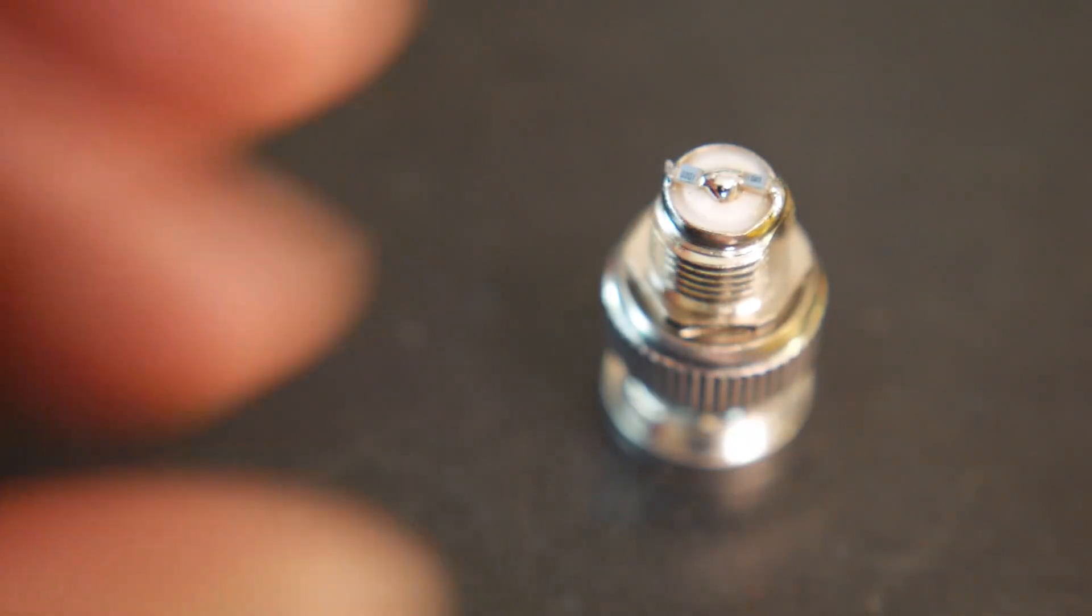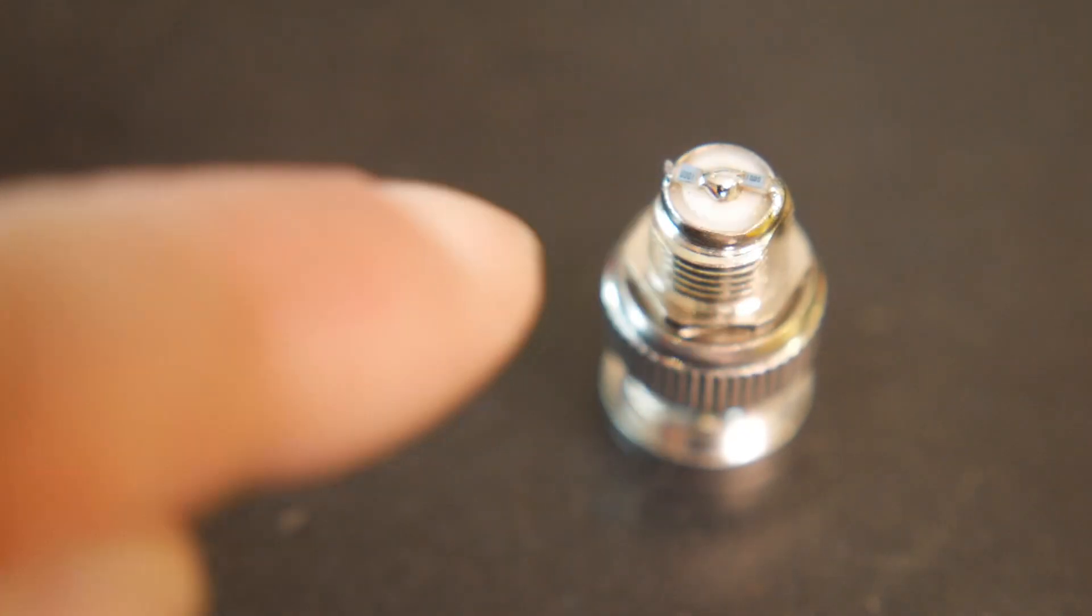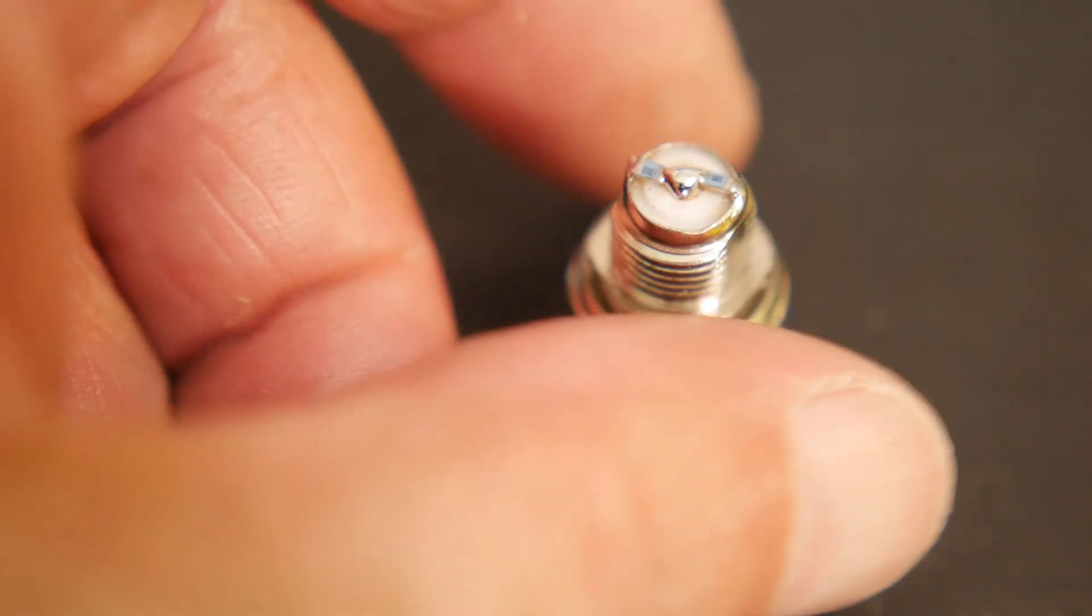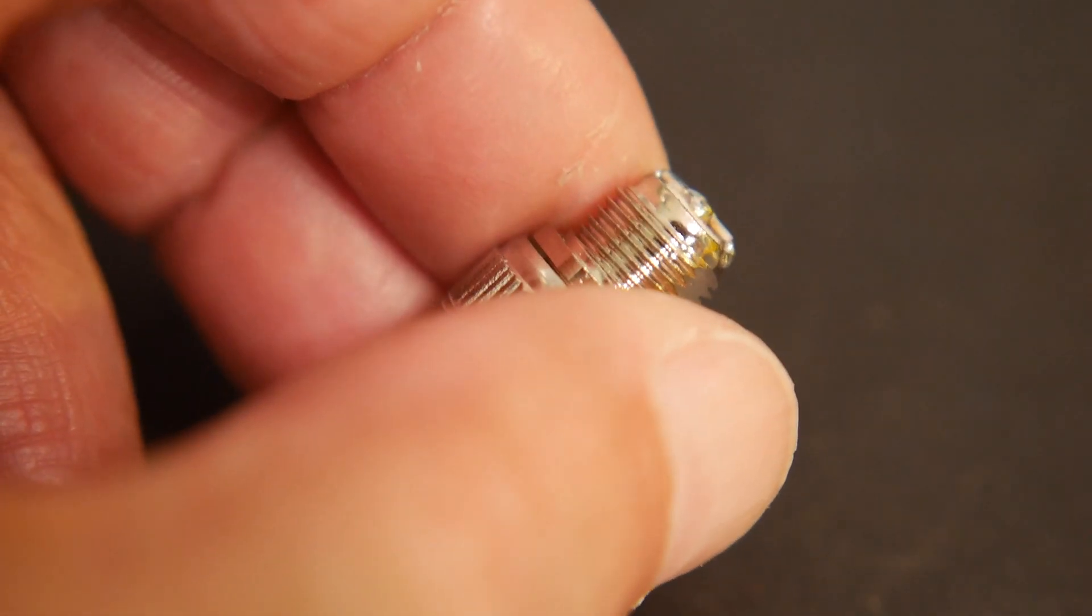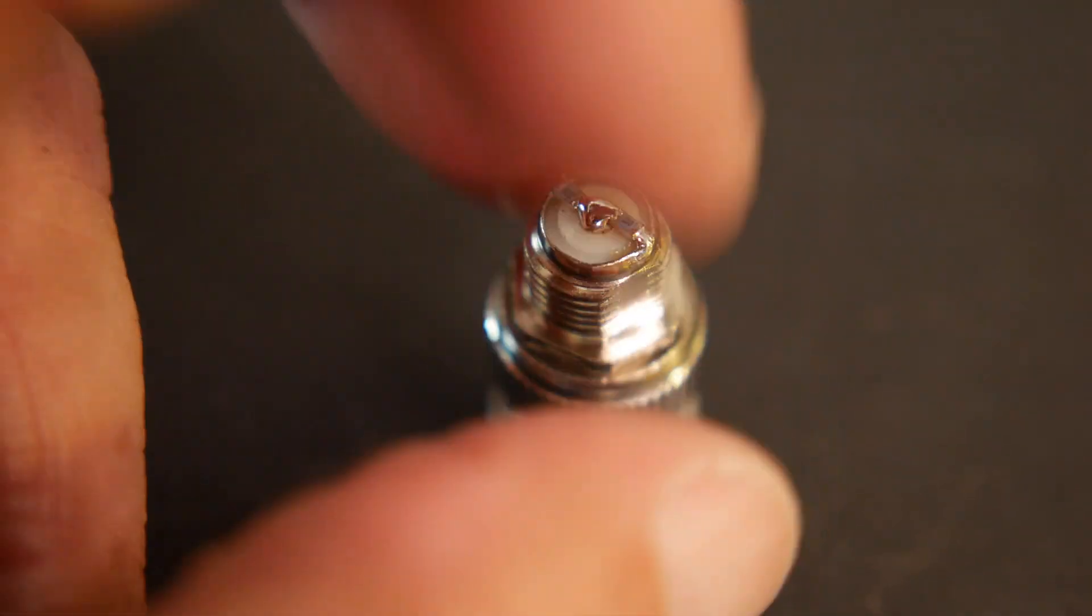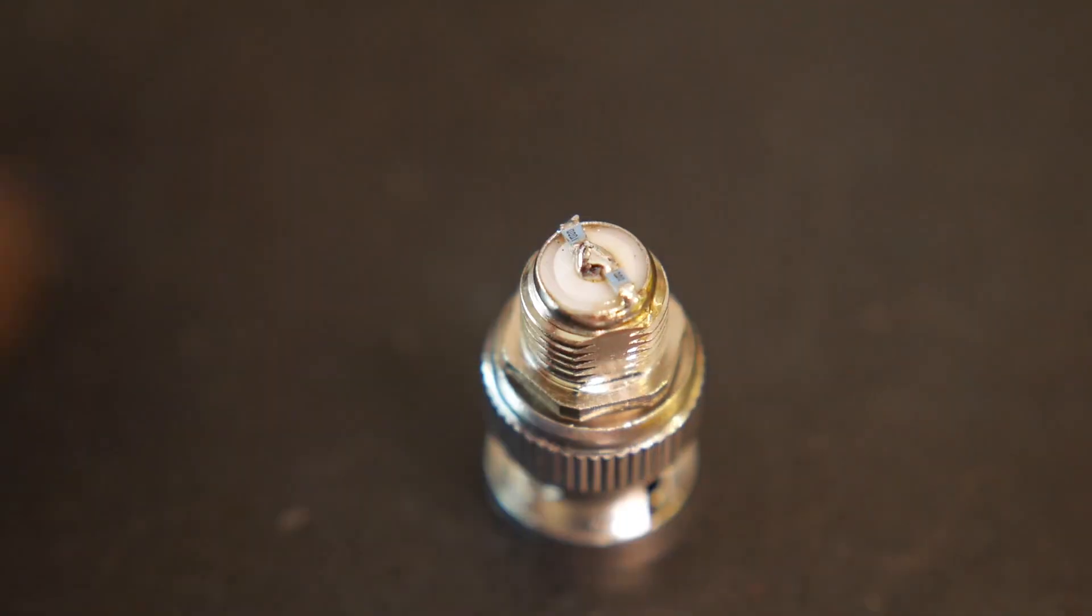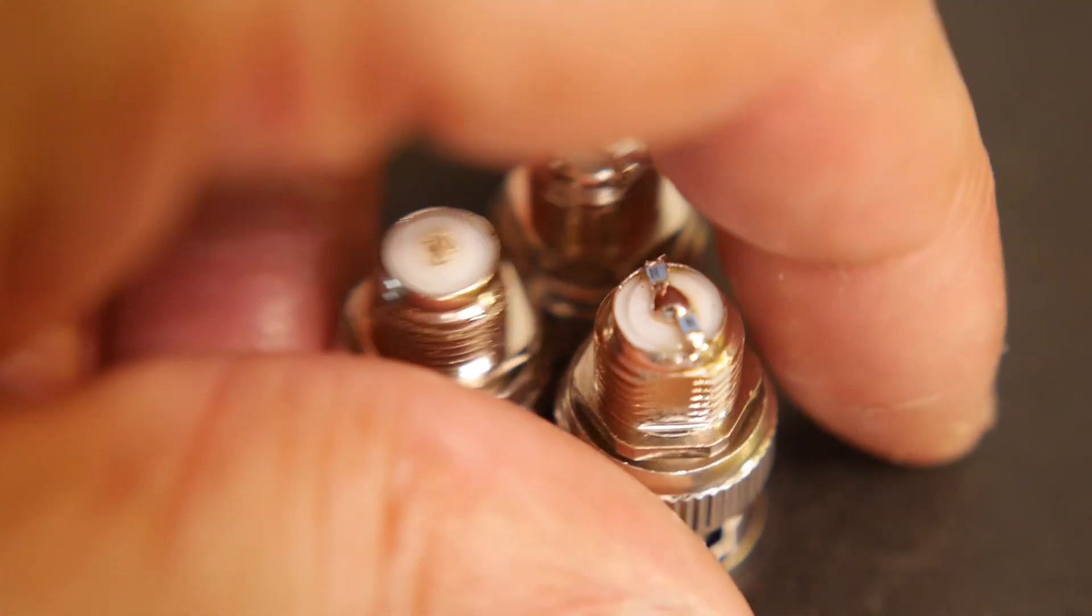And then I took some 100 ohm resistors and I actually spanned the gap on both sides. So 100 ohms and 100 ohms and it ends up being 50 ohms. And so that's how I got my load resistors on the same plane. Now this thing only goes to a gigahertz so you don't have to go too crazy about making all these cal standards exactly right.